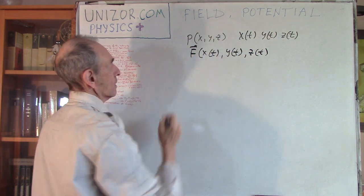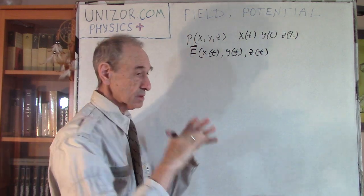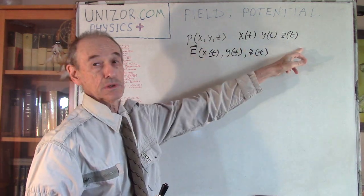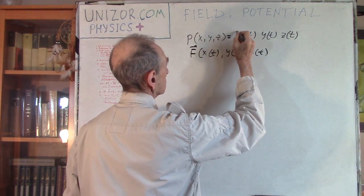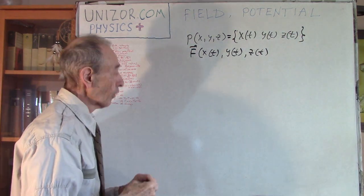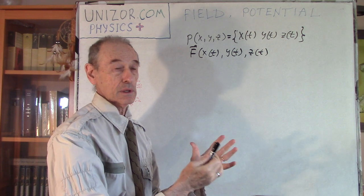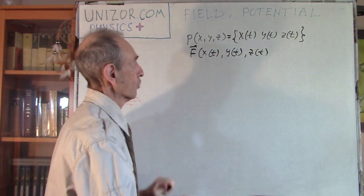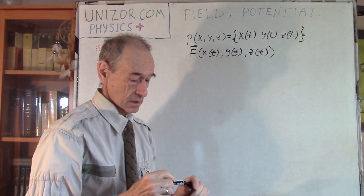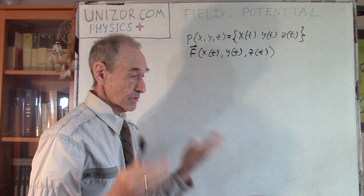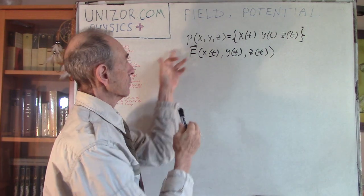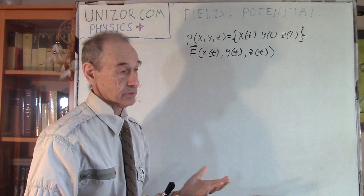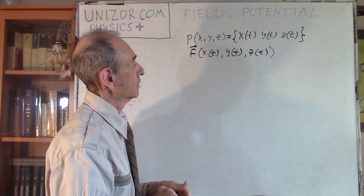We are assuming that we have a certain area in space where this point is moving according to its coordinates. At each point of this area where the point is moving, there is a vector which we can call the force vector, and it is defined at any point of this area. This is called the field.